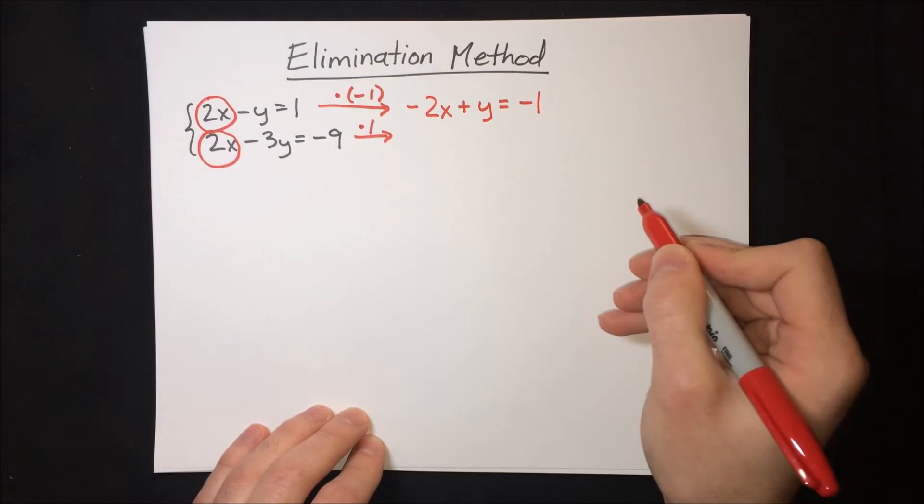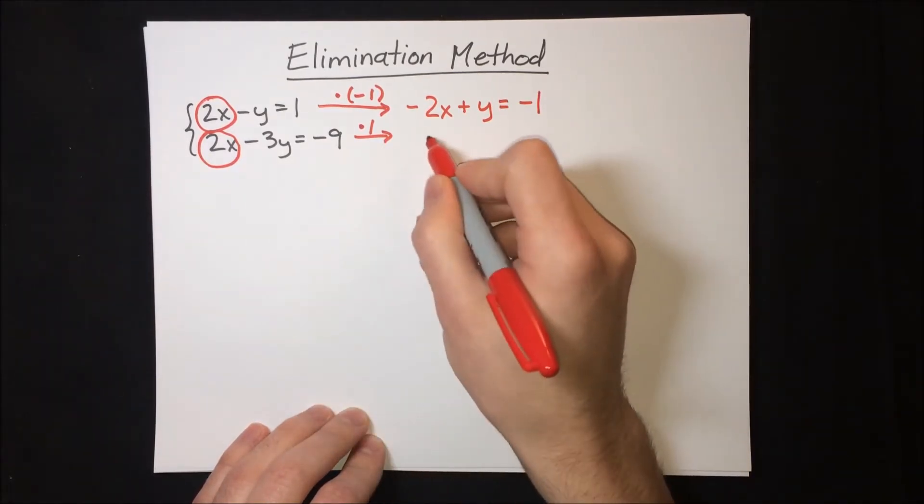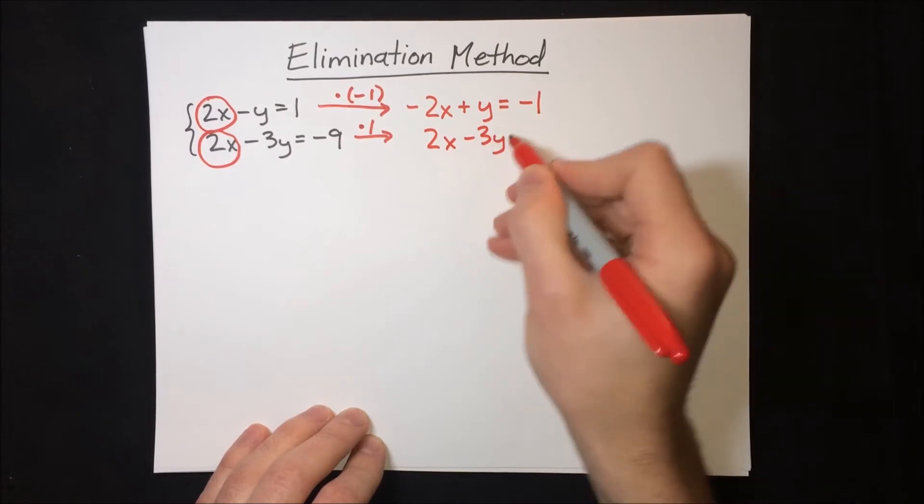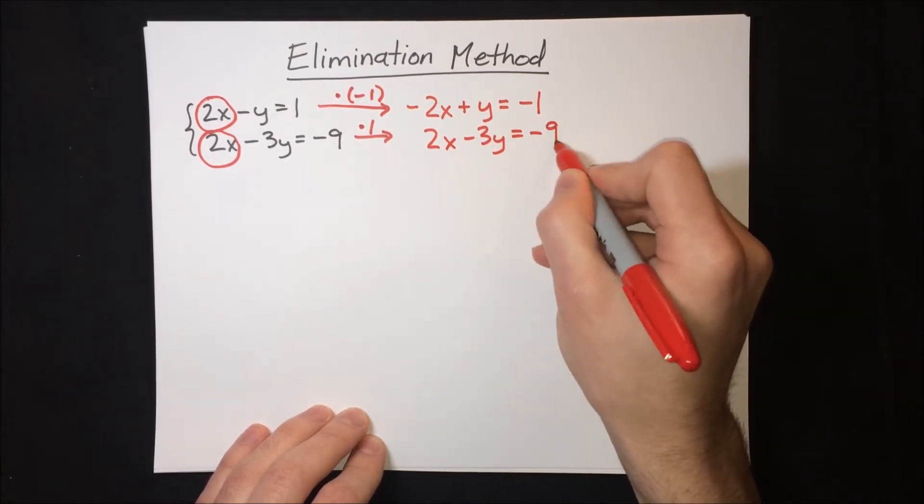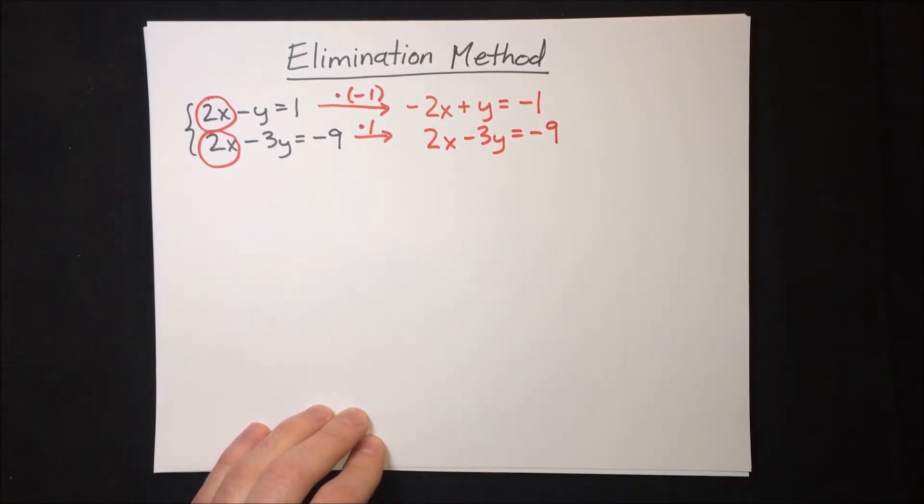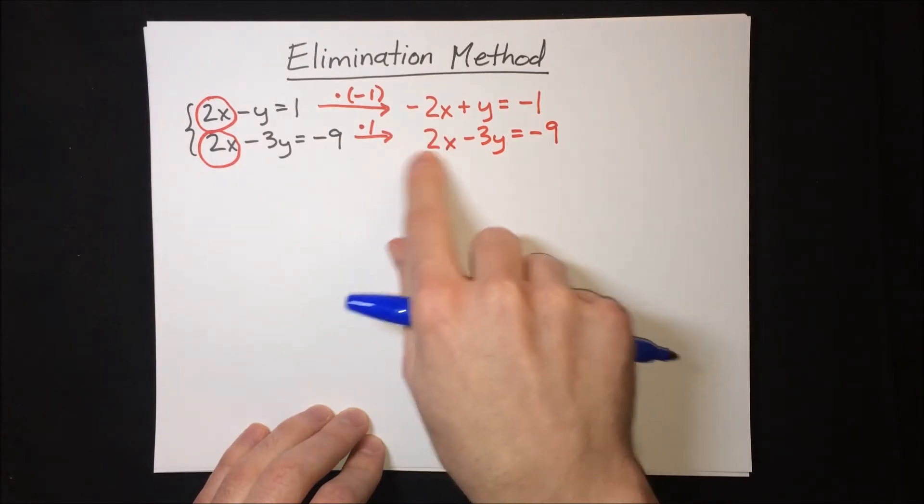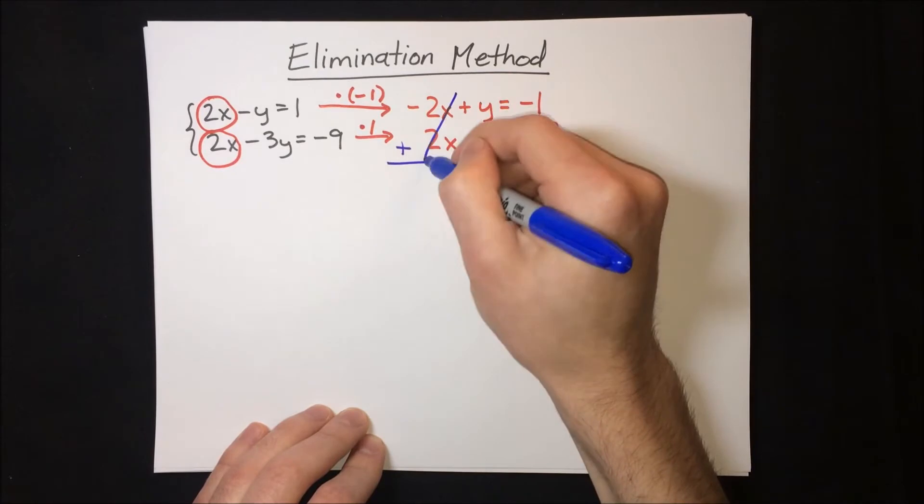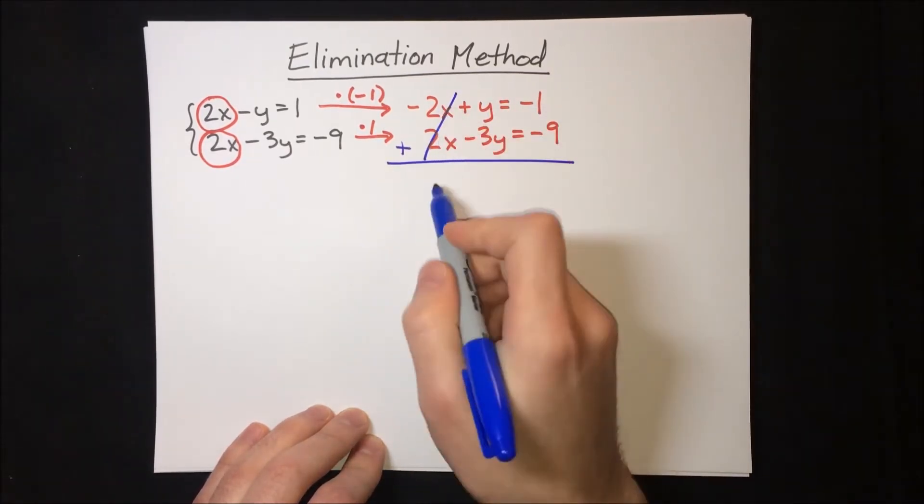equals negative 1. And then the bottom equation becomes the same, 2x minus 3y equals negative 9. Now this negative 2x and this 2x will cancel when we add. That eliminates the x variable.